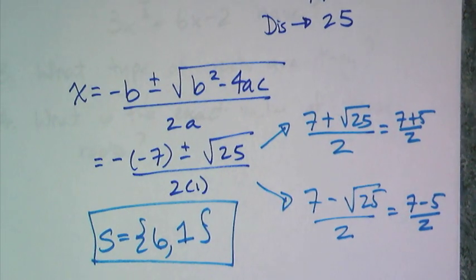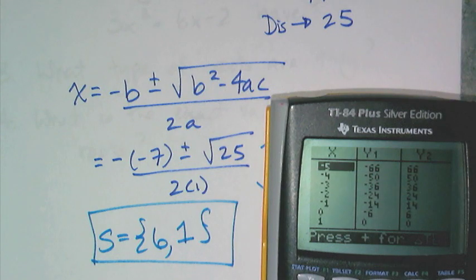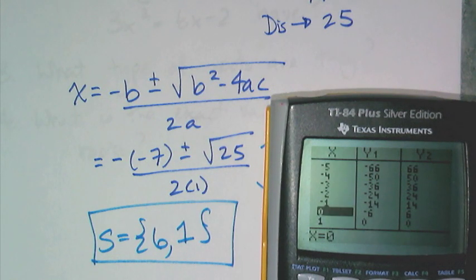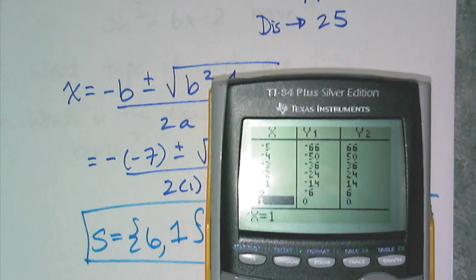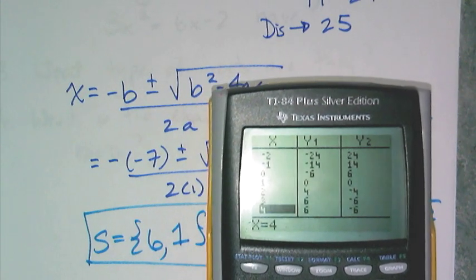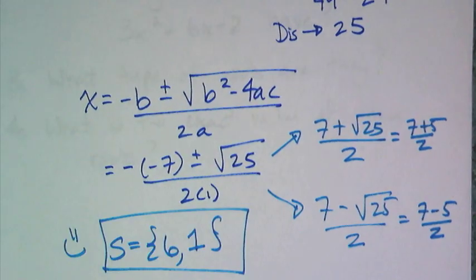Now before I put the happy face, I should check to make sure it's right. And I can do this by going to the table and checking the value at 1, which is 0, which is what x-intercept should have. And then the value at 6, which is also 0. So I know that this answer is correct.